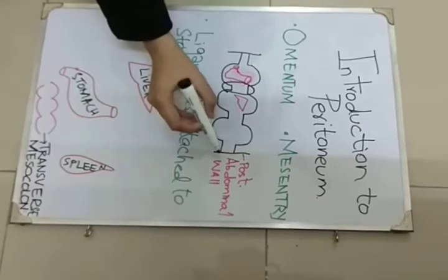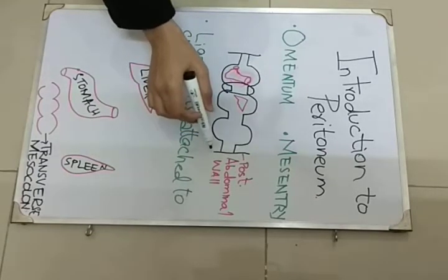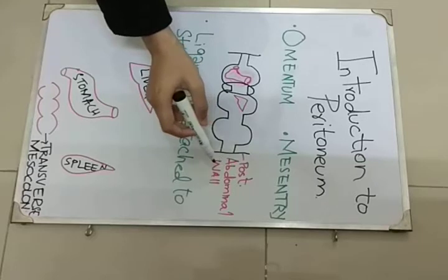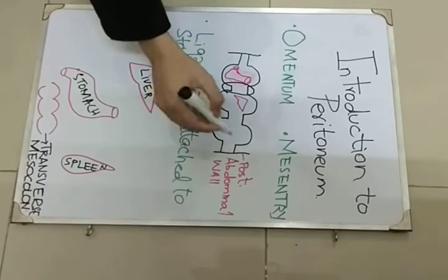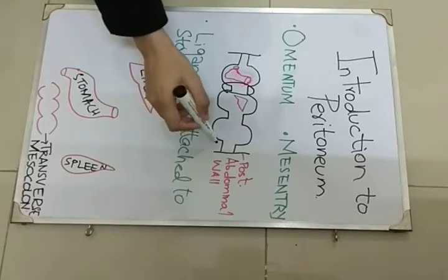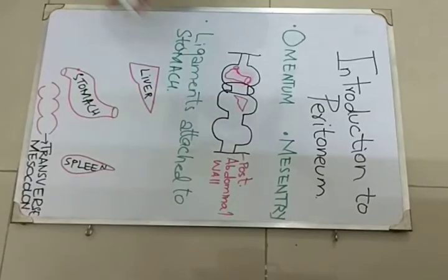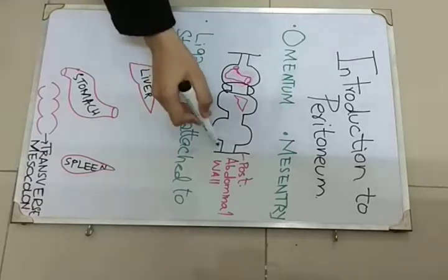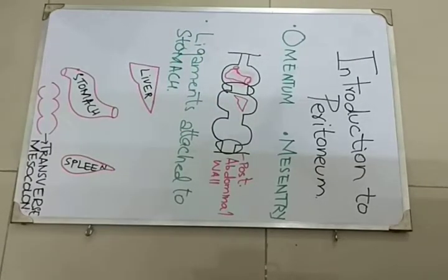And the double layer of peritoneum which joins any organ, especially the intestines, to the posterior abdominal wall is known as mesentery. Here we have the posterior abdominal wall, labeled as such. And let this be the small intestine. The double layer of peritoneum which is joining the small intestine to the posterior abdominal wall is called mesentery.